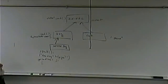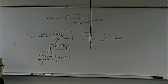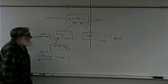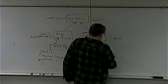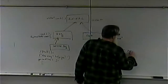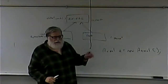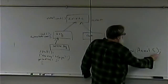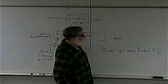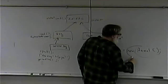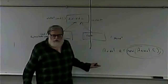Animal is an abstract class. What does that mean? In programming terms, it means you can't instantiate it. I cannot say "Animal A = new Animal()" — that's an error. You can't instantiate an abstract class; you can only instantiate concrete classes.